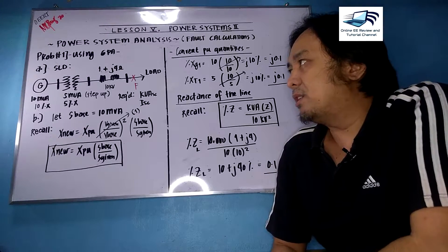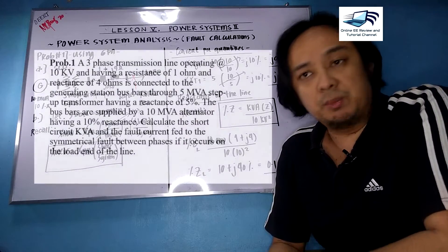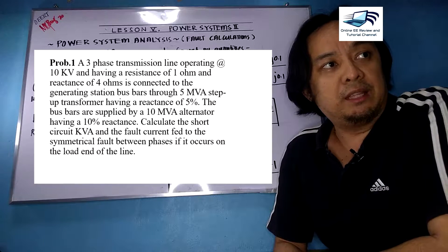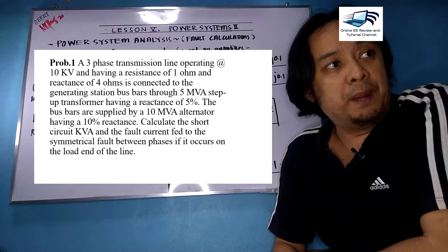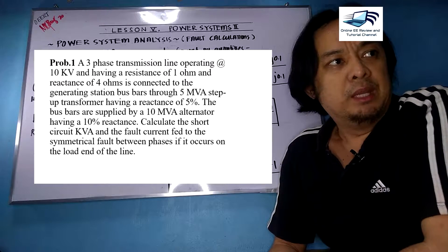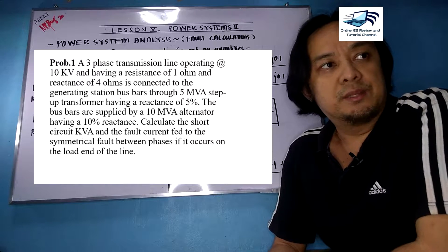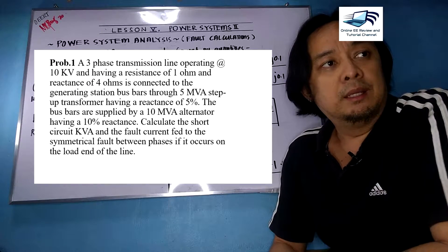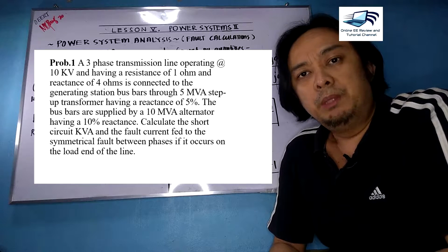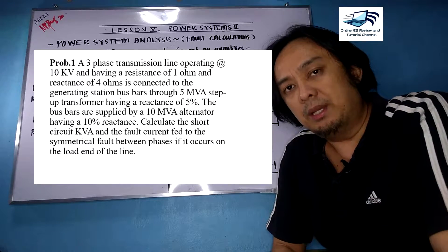Here is the first problem under fault calculations. Problem number one: a three-phase transmission line operates at 10 kV, having a resistance of 1 ohm and a reactance of 4 ohms, connected to the generating bus bars through a 5 MVA step-up transformer having a reactance of 5%. The bus bars are supplied by a 10 MVA alternator having 10% reactance. We need to calculate the short circuit KVA as well as the fault current for a symmetrical three-phase fault at the load end of the transmission line.